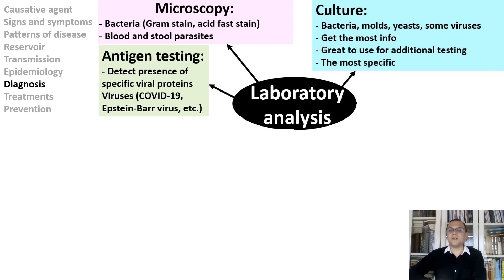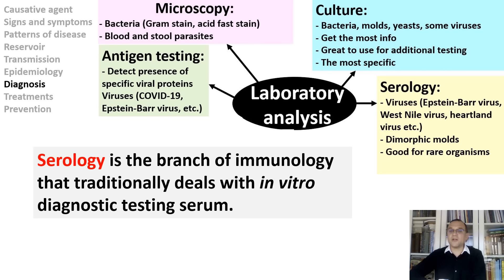Antigen diagnostic tests detect structural features on the outside of the virus — called antigens — that may be present in the patient sample. Antigens are specific viral proteins, and this test is likely to detect the virus during the period when someone is most infectious. This is the test often used at home to detect COVID-19. Serology is a branch of immunology that deals with in vitro diagnostic testing of serum. Antibody serology tests check for the presence or level of specific antibodies in the blood — antibodies are proteins that the immune system makes to fight foreign substances. A serologic test can determine whether a person has been exposed to a particular microorganism.